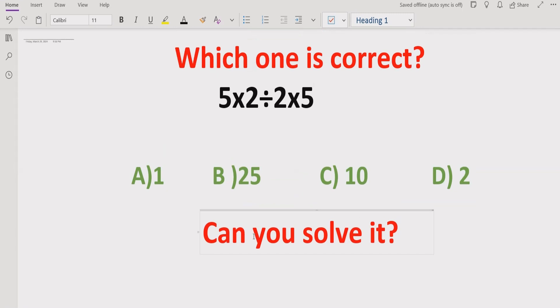Basically it is a simple arithmetic operation which contains basic operations: multiplication and division. We have to solve it and find out which answer is correct. We have four answers: 1, 25, 10, and 2.